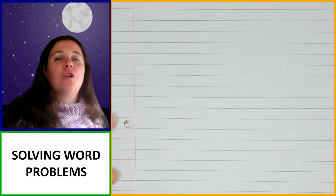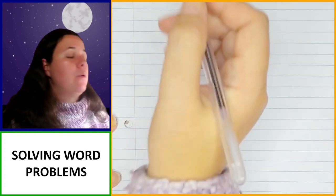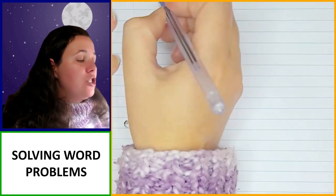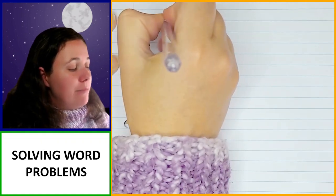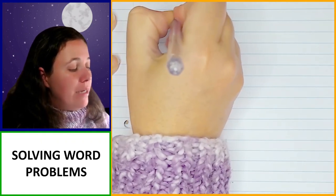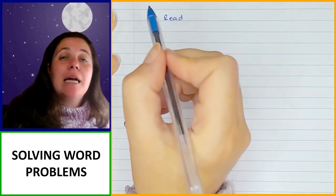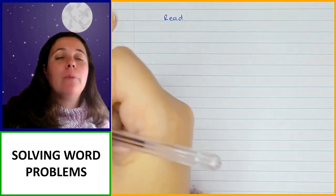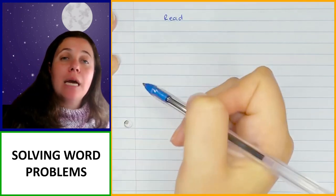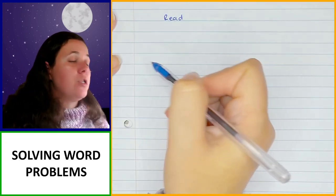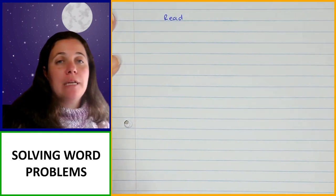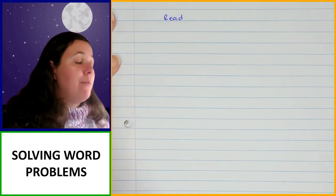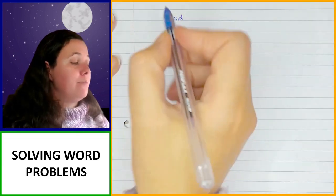The first thing we need to do is go through some things that will help you while you're solving word problems. When you're solving a word problem, the very first thing you need to do is make sure that you read that problem carefully. Identify important information — it might be helpful to underline the key points so that you can focus on the information that's helpful and not be distracted by things that might confuse you.